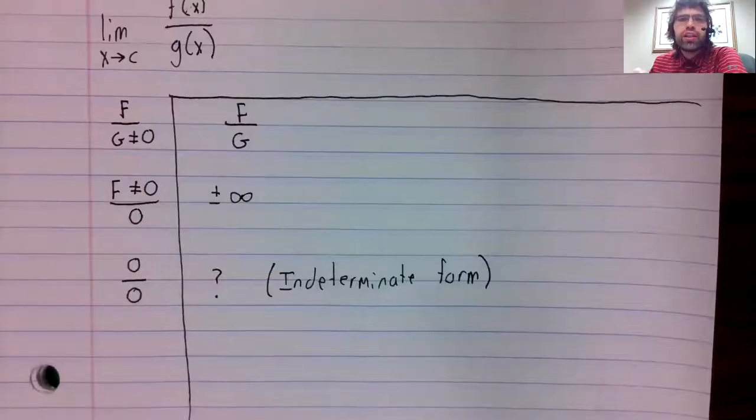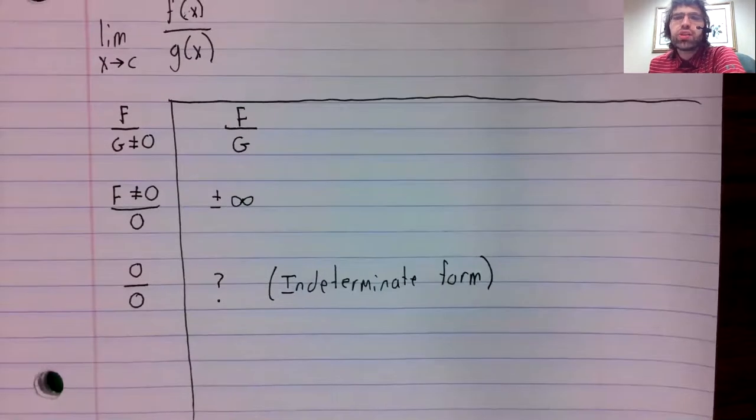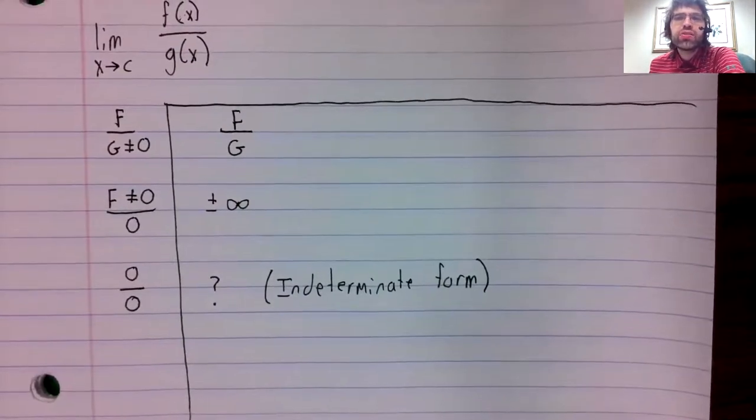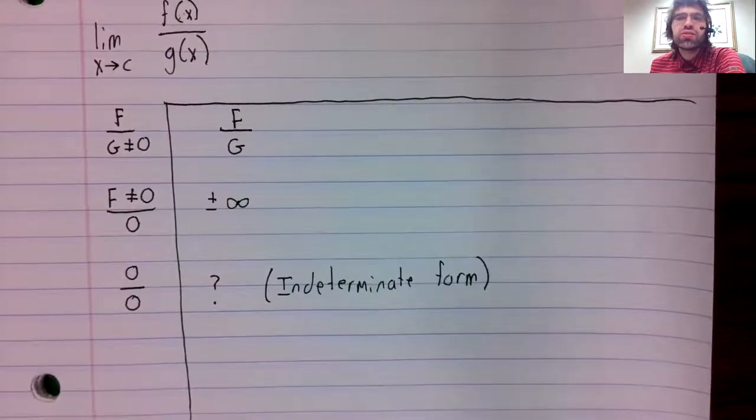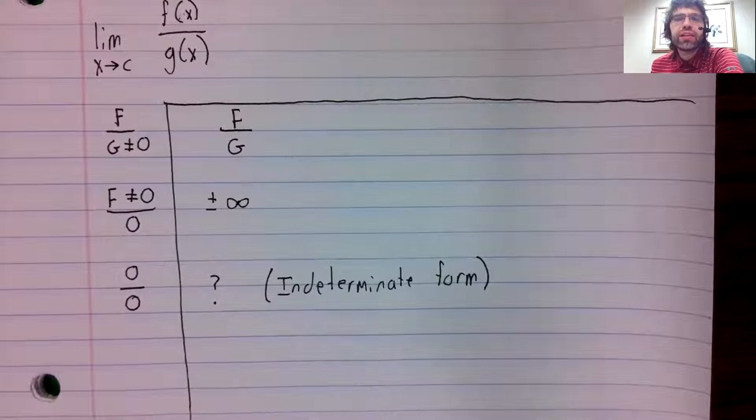It's called indeterminate because it doesn't give you enough information to say what the limit is. The limit might exist, it might not exist. If the limit does exist, who can say what it is? You have to somehow investigate it.